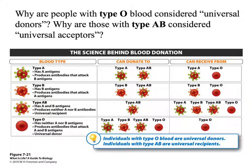Blood type is very important, particularly if you have to have a blood transfusion. Type A blood can receive blood only from other type A's or from type O's, and can donate to people with type A or type AB blood. Type B blood can only donate to type B or type AB, and can only receive from type B or type O people. Type AB can only donate to other type AB, but they can receive blood from any other blood type — they are the universal receiver. Type O is the universal donor; because there are no antigens, type O blood can be given to any blood type. However, type O can only receive from other type O's.